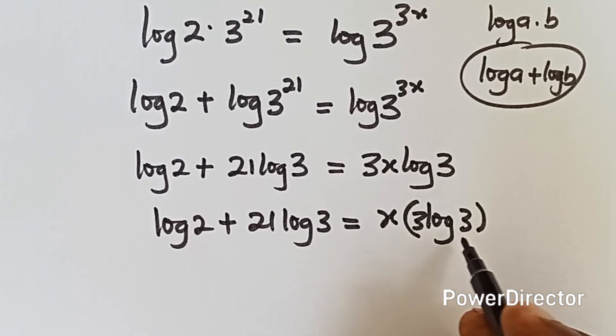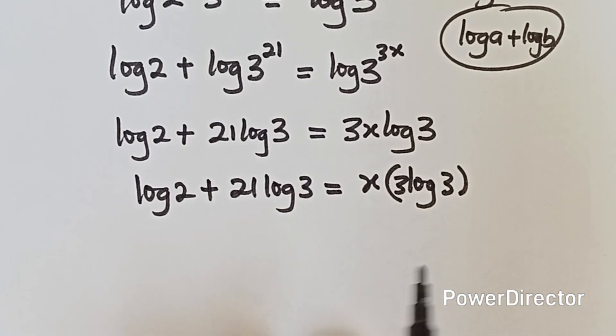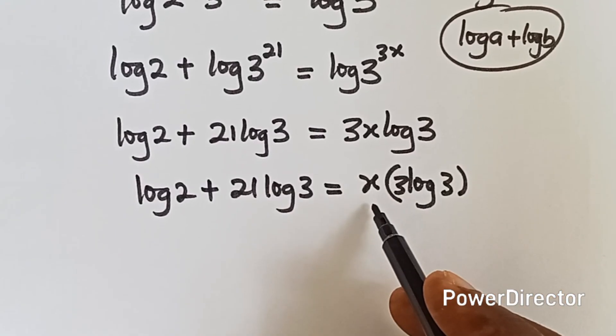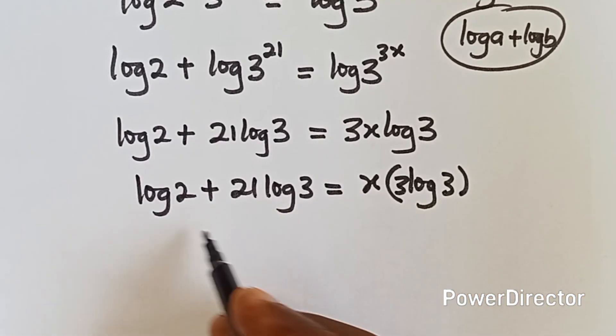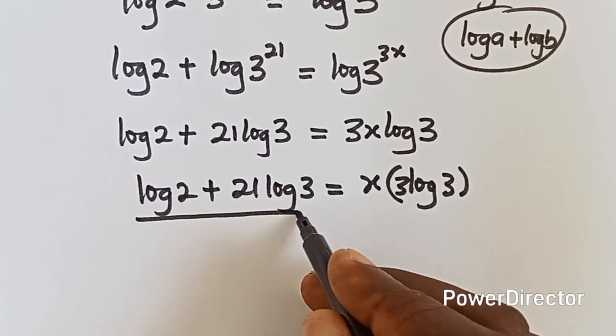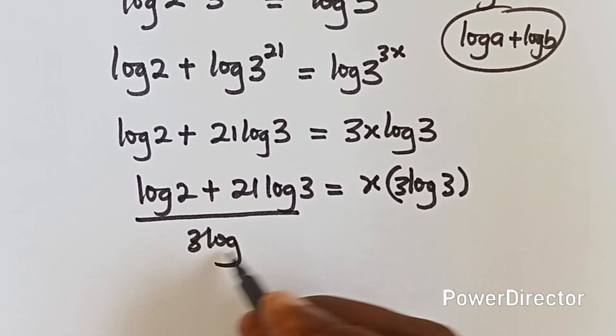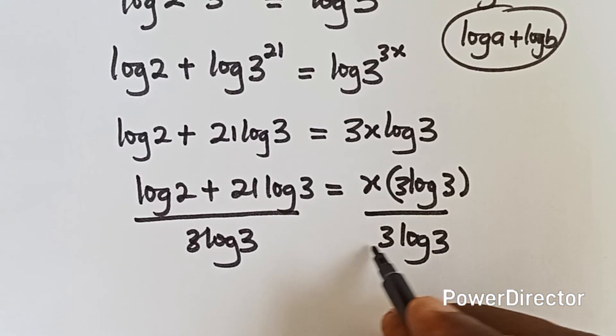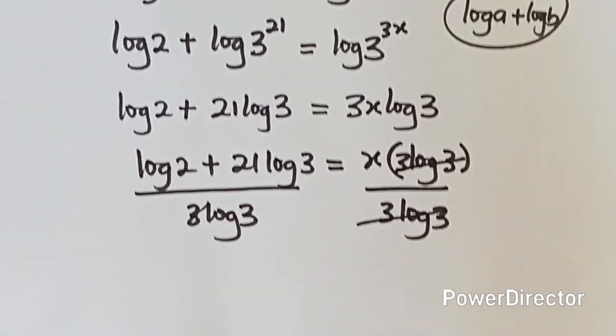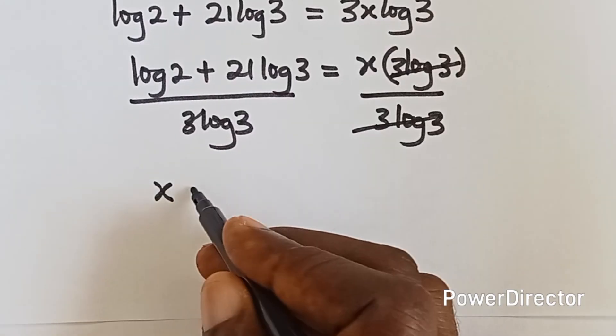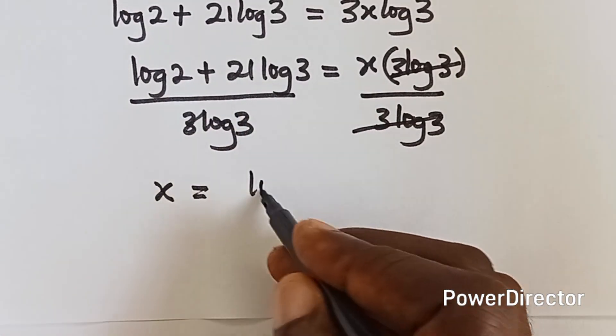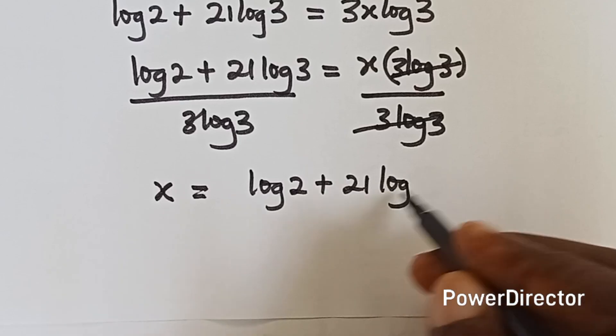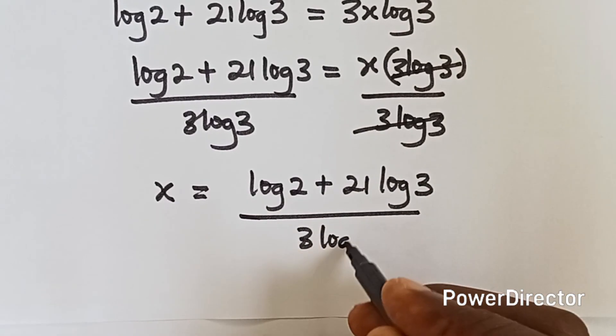Okay, by the time we open this bracket, we're going to have this. I'm just trying to isolate x so that we can find x. Now we divide both sides by 3 log 3 so that we can have x. So it means that you can divide this by 3 log 3 and also divide this side by 3 log 3. So 3 log 3 cancels to 3 log 3. Then we have x equals to all these. That is log 2 plus 21 log 3 over 3 log 3.